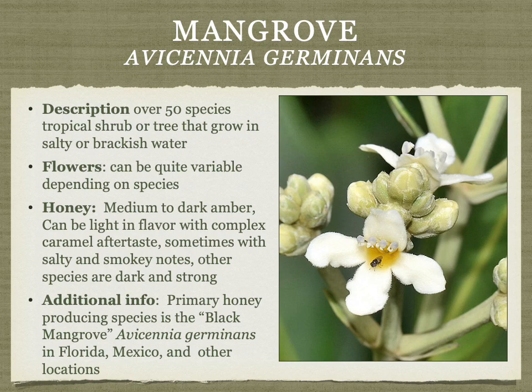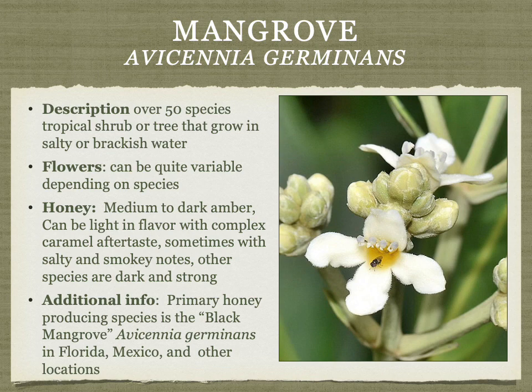Mangrove honey comes from shrubs and trees that grow in salty or brackish water near shorelines. The honey is variable, but the main honey-producing species is the black mangrove from Florida and Mexico. The honey is light in flavor with a complex caramel aftertaste, sometimes with salty and smoky notes. Other mangrove species can produce darker or more strongly flavored honey.